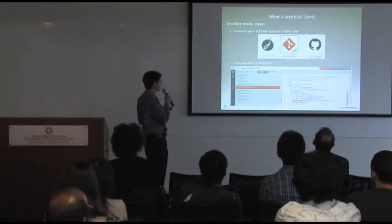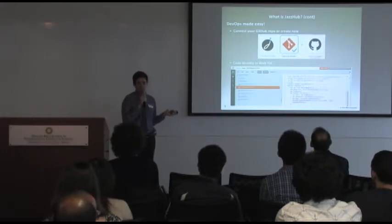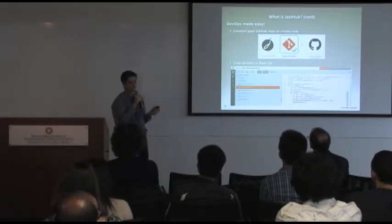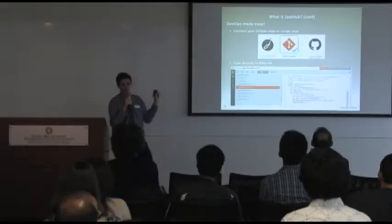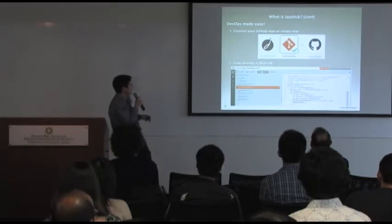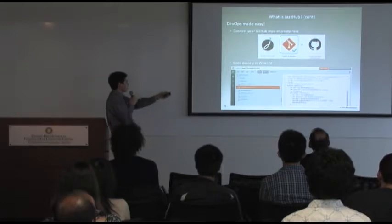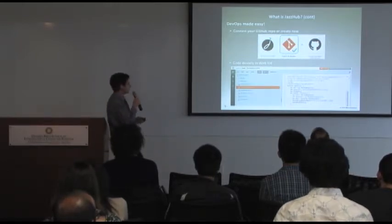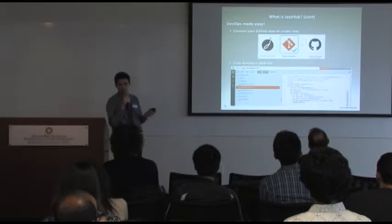A lot of people tell me, 'I never heard of JazzHub — everybody uses GitHub nowadays, why not just use GitHub?' Well, if you want, you can connect your GitHub repository directly to JazzHub, and you get the best of both worlds. JazzHub has a fully featured web IDE with code highlighting, error checking, and automated code completion. But if you don't want to use that, you can use your Eclipse IDE or command line interface — whatever you want.